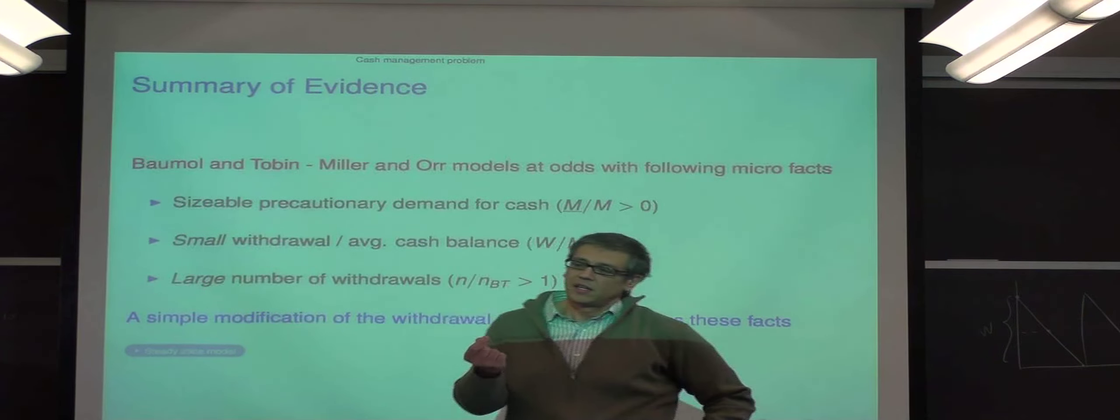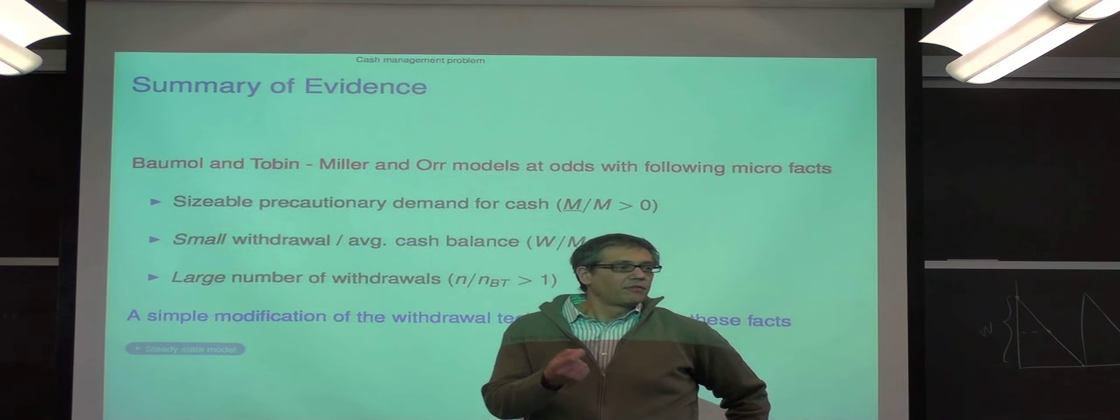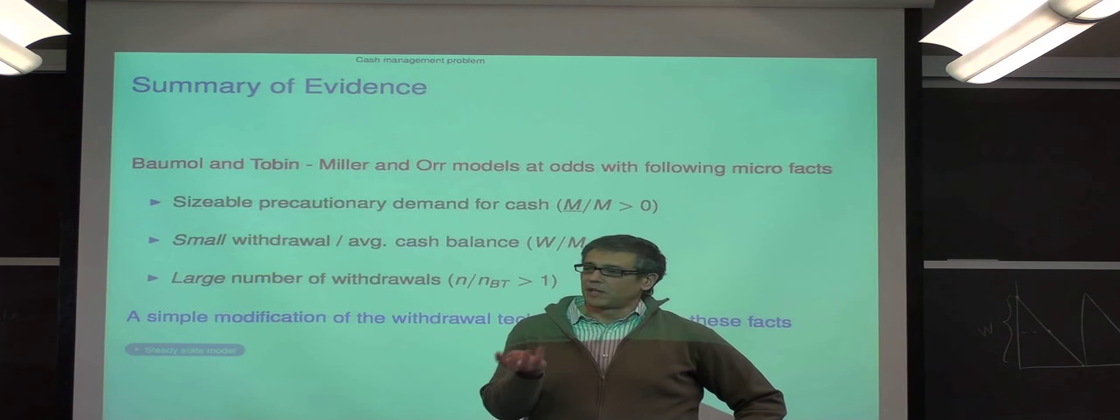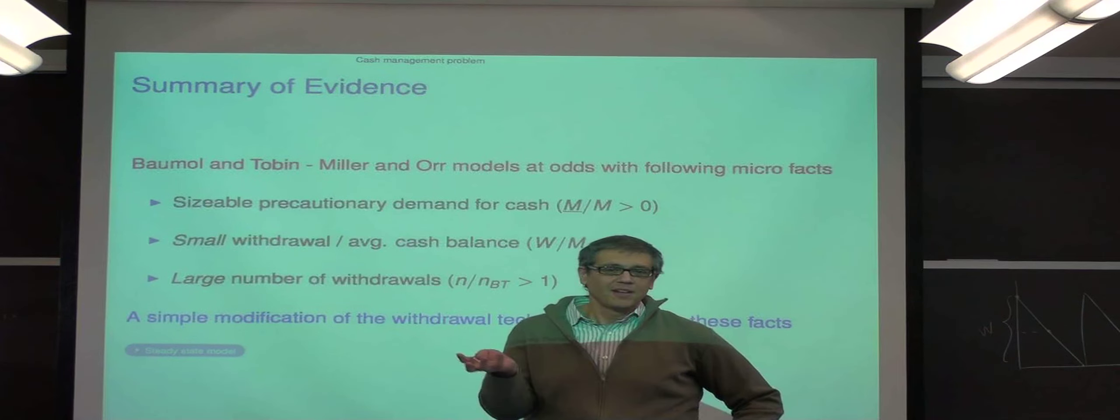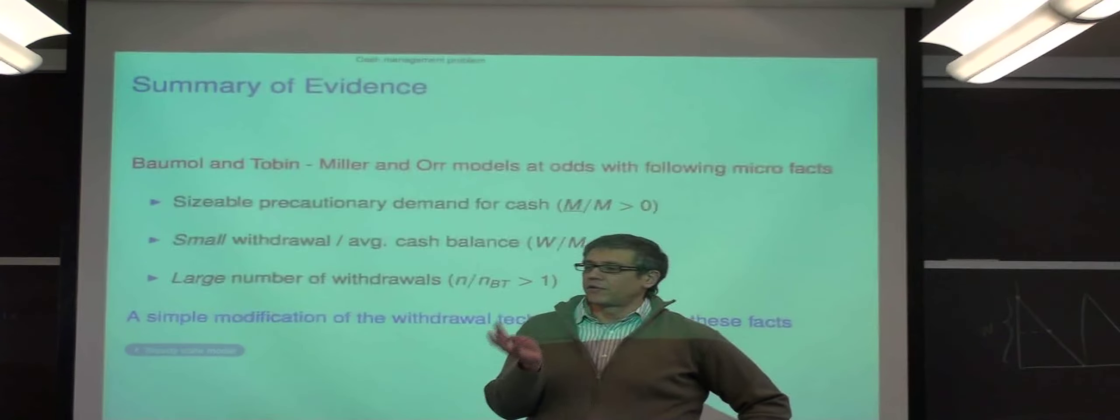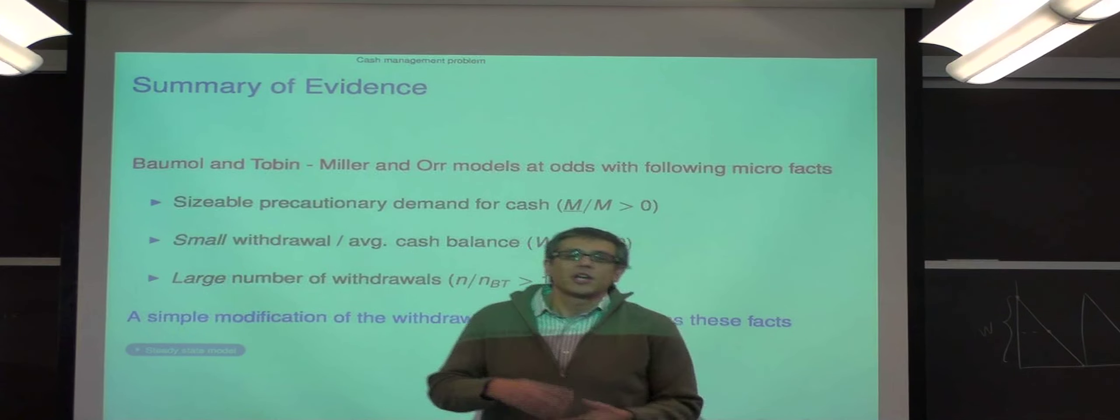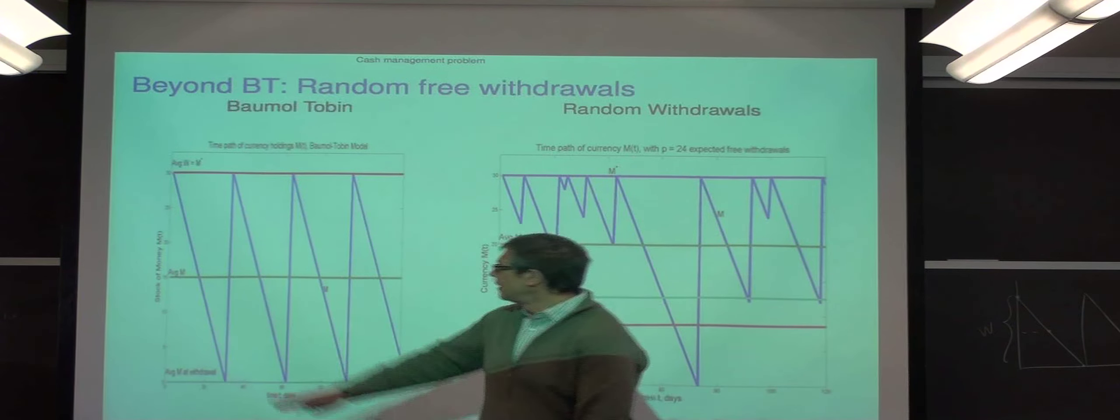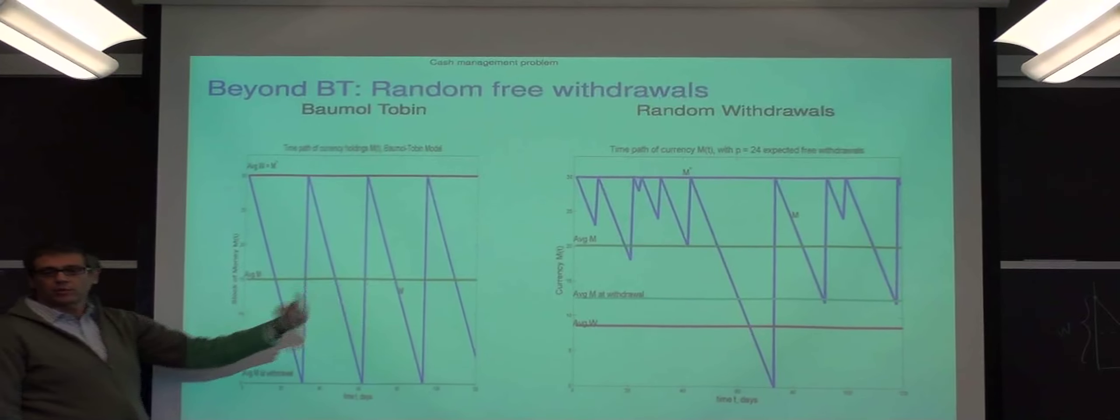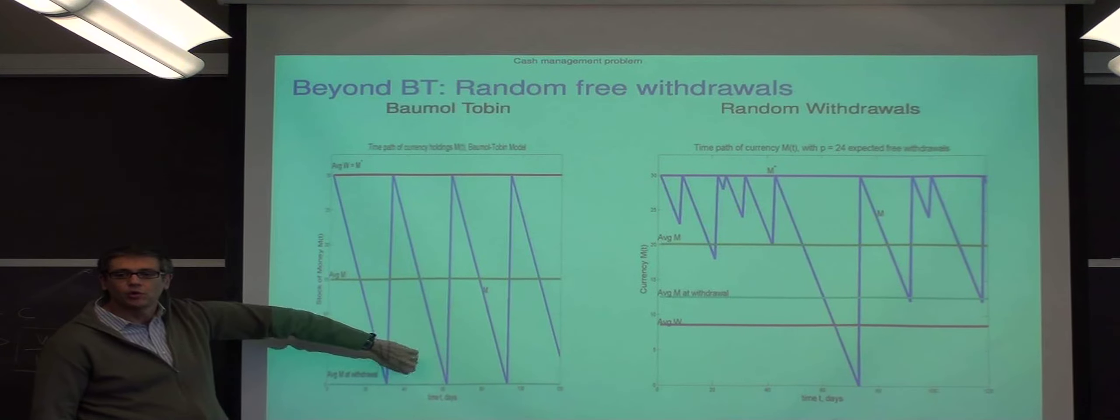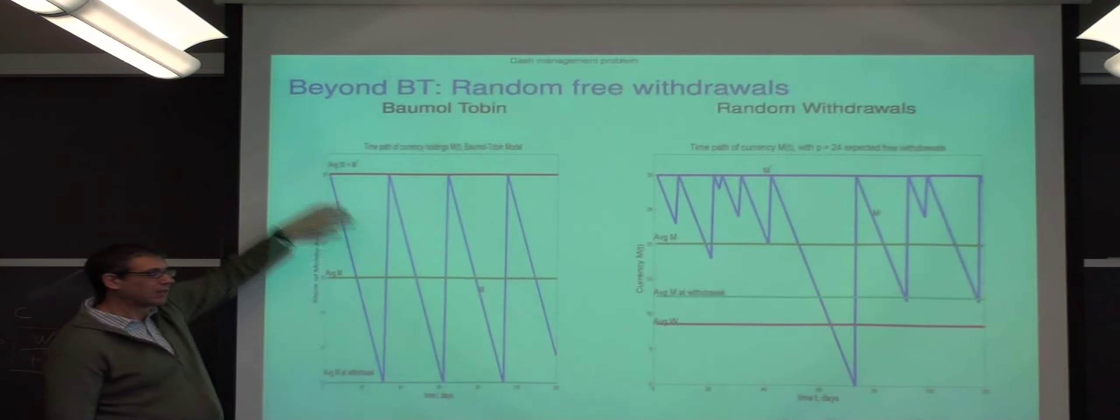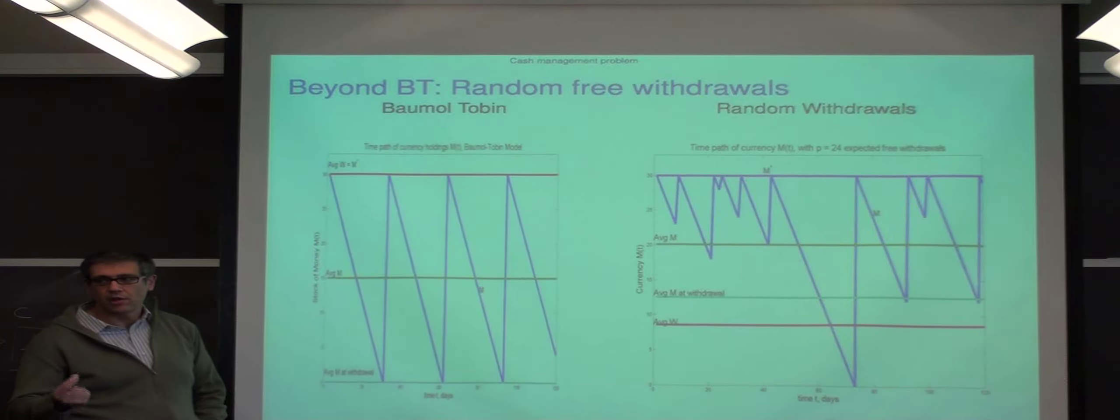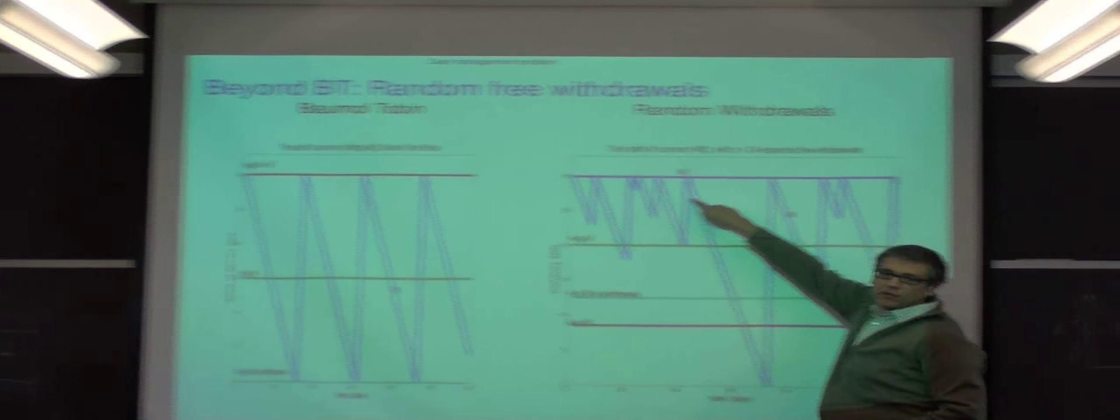So instead of having this P being that there are five trips that are free, this is more like a shop. Now, think about the free opportunities to withdraw. It's not that you have five every time period, every month or something. But that P is a Poisson arrival rate of a free withdrawal opportunity. And now you have to write a model with randomness and discounting, kind of the way we write models. But the idea is the same.